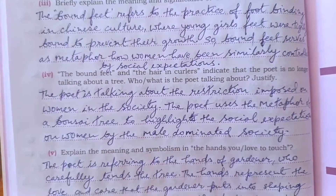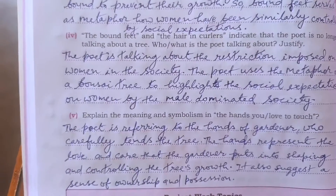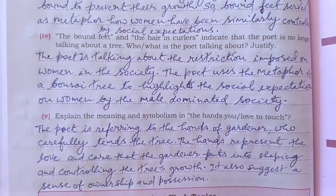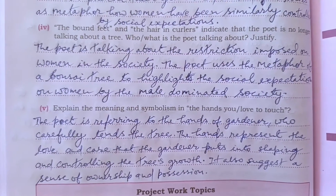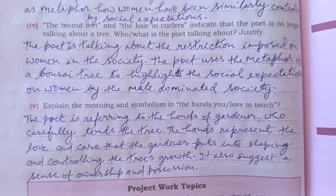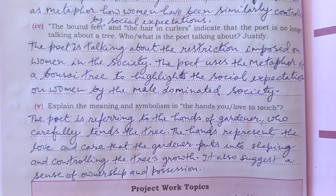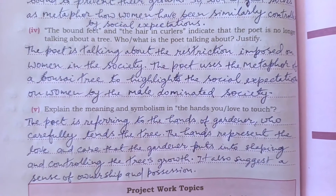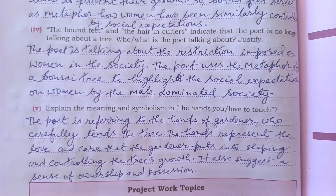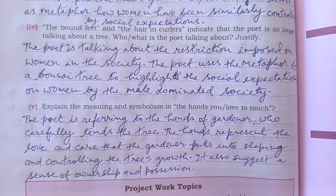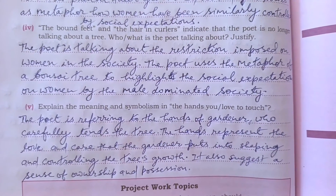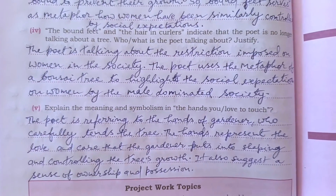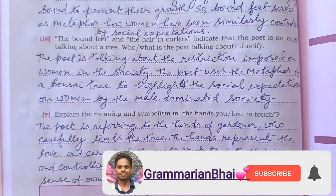Question five: explain the meaning and symbolism in 'the hands you love to touch.' The answer is: the poet is referring to the hands of the gardener who carefully tends the tree. The hands represent the love and care that the gardener puts into shaping and controlling the tree's growth. It also suggests a sense of ownership and possession.